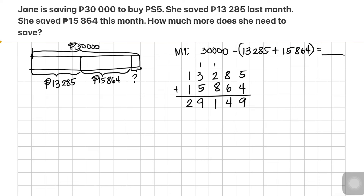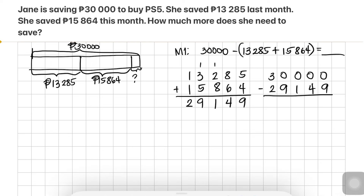Now we subtract 29,149 from 30,000. We need to regroup because we cannot subtract 9 ones from 0 ones. The only digit present is in the ten-thousands place.